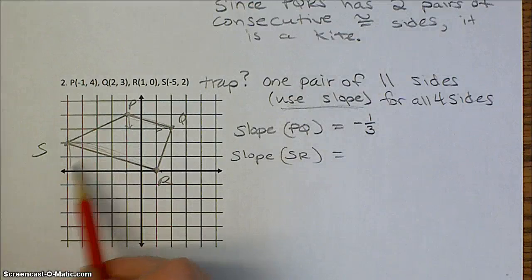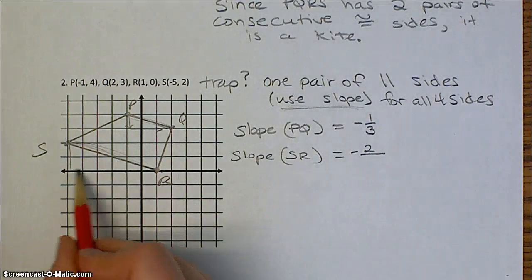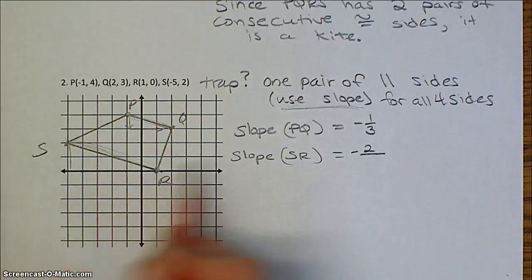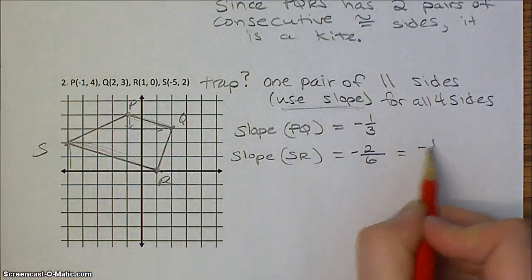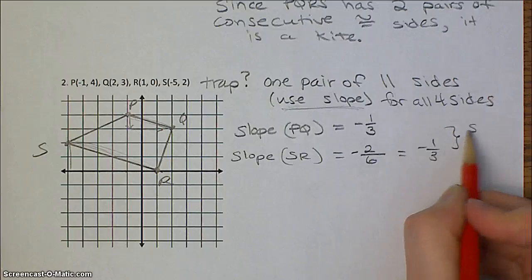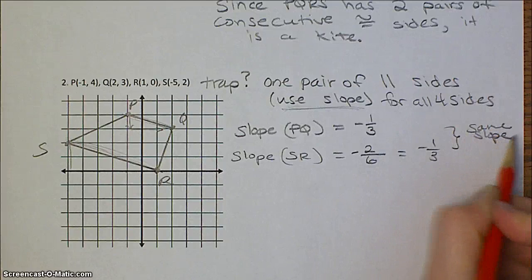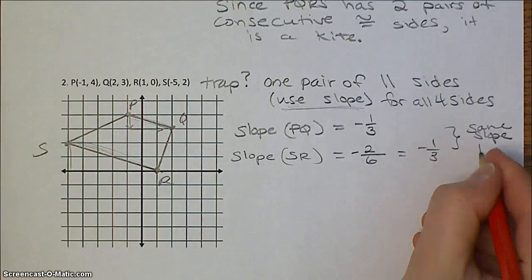And then also the slope of SR, which is down 2, and to the right 6, which does simplify. Same slope, and we know whenever two segments have the same slope, they are parallel.